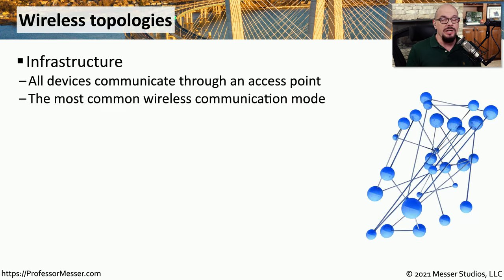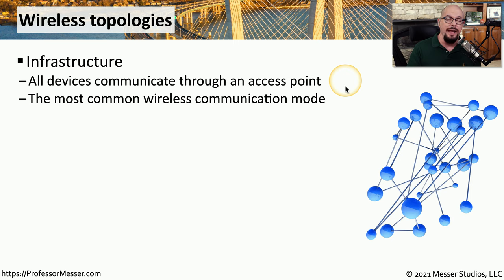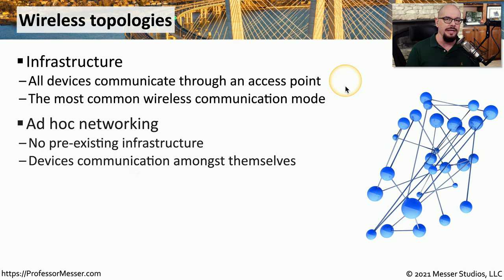If you're using a wireless network, you may be communicating in a number of different ways. If you're using an access point, you're probably communicating over an infrastructure connection. This means that all of the devices on your network are communicating through an access point. This is probably the most common way to use wireless connections, but it's not the only way to communicate over a wireless link.